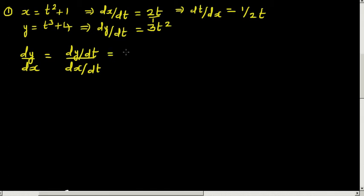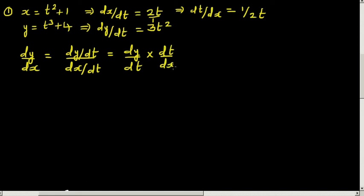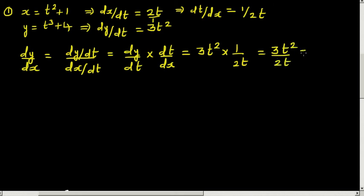So dy/dx equals dy/dt times dt/dx — the dt terms cancel, giving dy/dx. dy/dt is 3t² times dt/dx is 1 over 2t, so that is 3t² over 2t. Simplifying, that gives 1.5t.